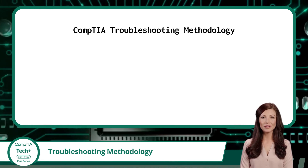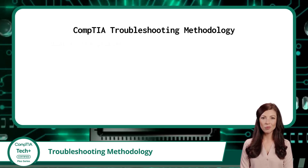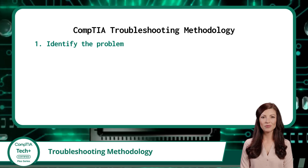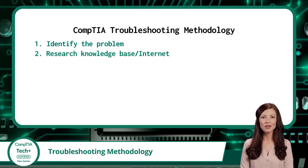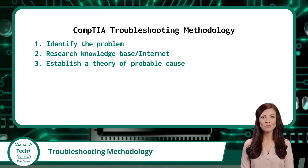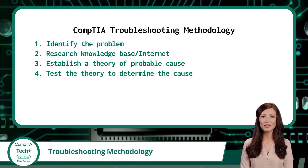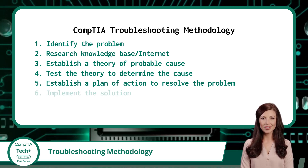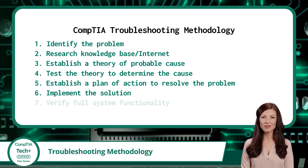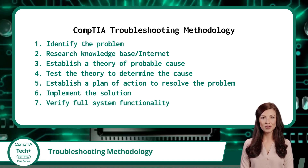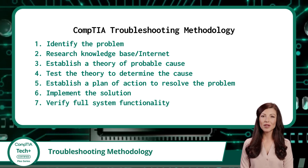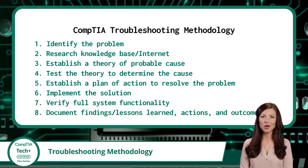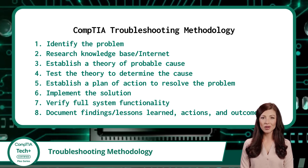CompTIA's troubleshooting methodology can be broken into eight steps: 1. Identify the problem. 2. Research knowledge base or internet, if applicable. 3. Establish a theory of probable cause. 4. Test the theory to determine the cause. 5. Establish a plan of action to resolve the problem. 6. Implement the solution. 7. Verify full system functionality and, if applicable, implement preventive measures. 8. Document findings or lessons learned, actions, and outcomes.